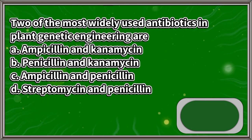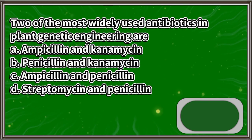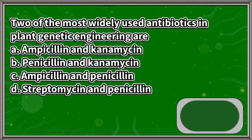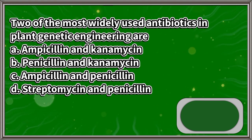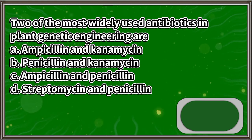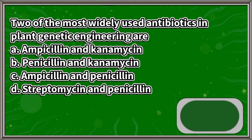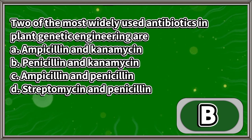Two of the most widely used antibiotics in plant genetic engineering are: A. Ampicillin and kanamycin, B. Penicillin and kanamycin, C. Ampicillin and penicillin, D. Streptomycin and penicillin. The answer is letter B.